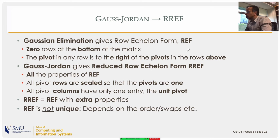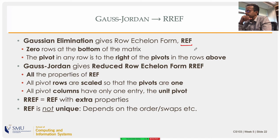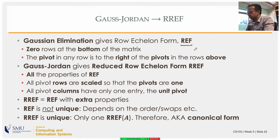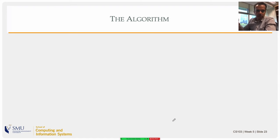REF is not unique — since you have freedom to swap rows, you can get different row echelon forms for the same matrix. RREF, on the other hand, is unique for any given matrix, which is why it is called a canonical form.